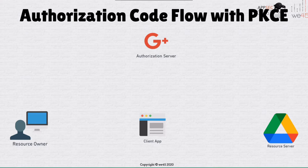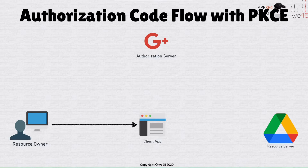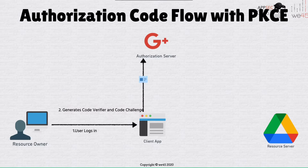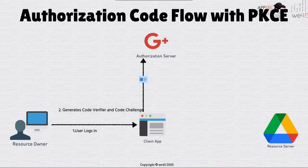Let's take the standard authorization code flow and look at how PKCE extends it by adding two additional attributes. Starting from the beginning: the resource owner accesses the client application, and the client application makes an initial request to the authorization server for an authorization code first, then an access token next. Before it does that, the client application generates two additional security attributes: the code verifier and the code challenge.